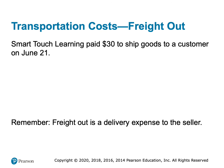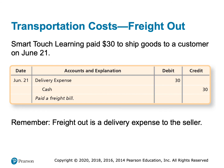We offered our customers free shipping, which just means we paid the shipping. We paid $30 to ship goods to the customer. When we pay the shipping company, we debit a delivery expense account — sometimes called freight out, shipping and handling expense, or shipping expense. Whatever it's called, it is an expense to the seller. Then we credit cash or accounts payable, depending on how we paid for the shipping.